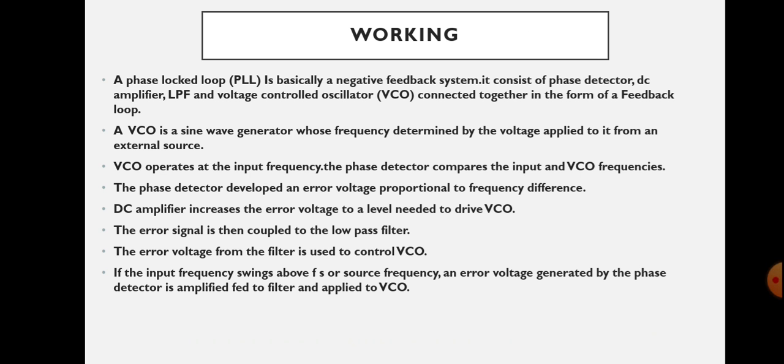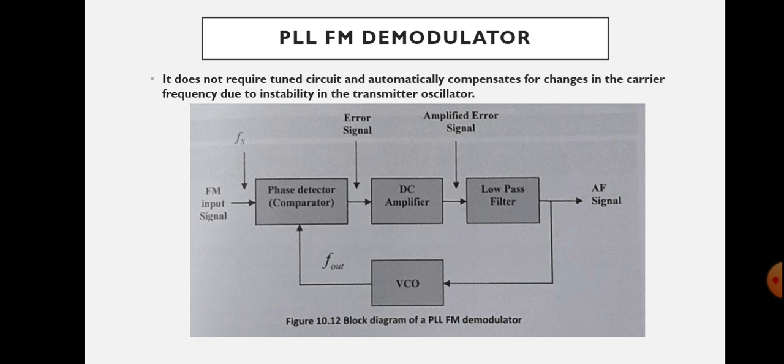The phase locked loop is basically a negative feedback system. It consists of a phase detector, DC amplifier, low pass filter, and voltage controlled oscillator — all connected together in the form of a feedback loop. The forward path and feedback path are arranged such that the VCO appears in the feedback path.